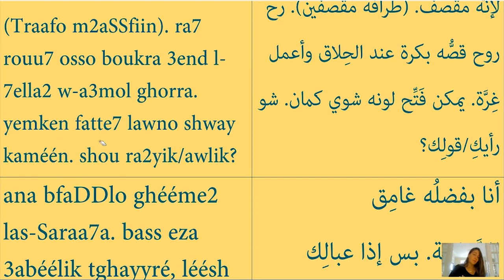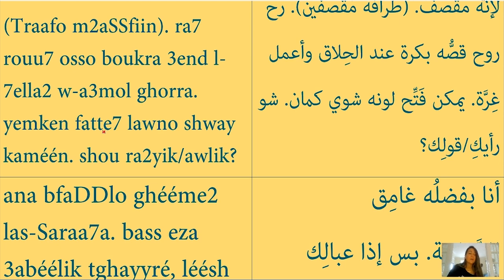'Yimkin fata7 lono shway' — yimkin means maybe. Fata7 literally means I open up, so for example opening boxes is 'ana am fata7 ilab.' When used for hair, lightening the color is like opening the color — that's why we say 'ana am fata7 lon sha'ri,' meaning I am lightening my hair color. Notice also that the ب prefix drops here because the verb is followed by 'yimkin' — maybe. Anytime you have a verb after yimkin, you drop the ب, so you wouldn't say 'yimkin bifta7 lono.'